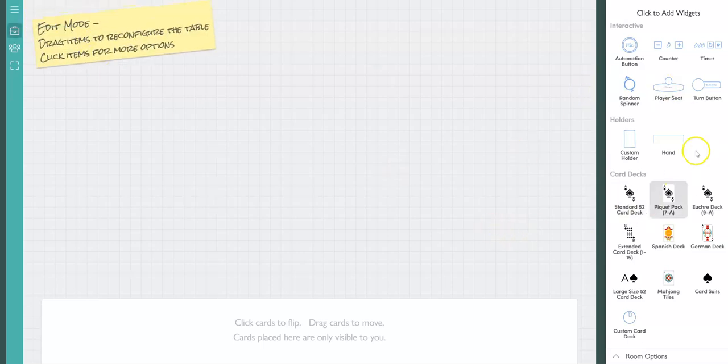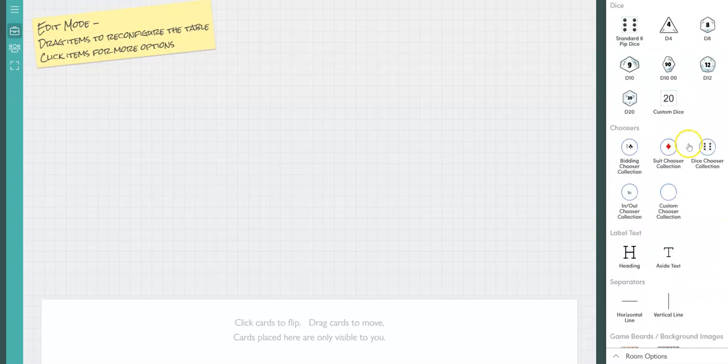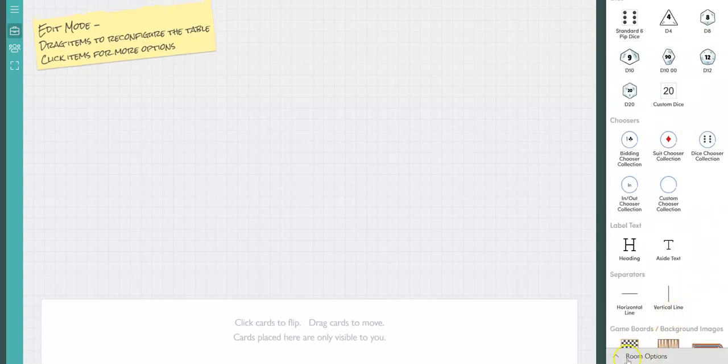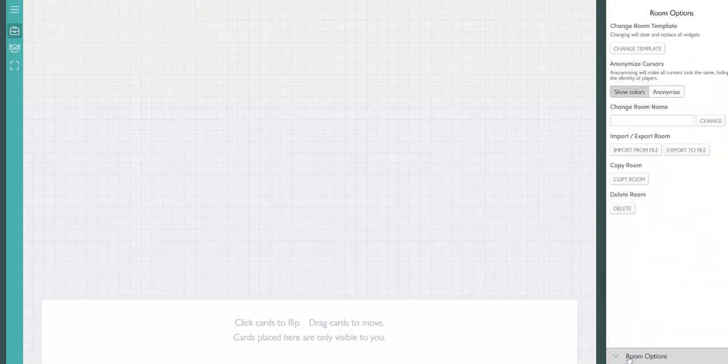You will see an interface that looks like this. You don't need to worry about any of this because you're going to go to the room options menu and then you will click import from file.